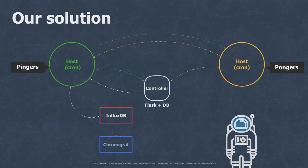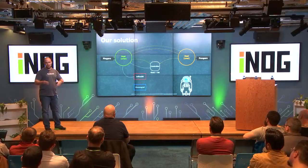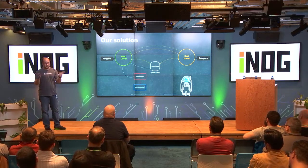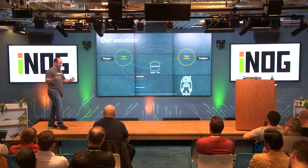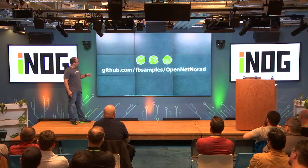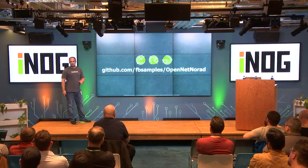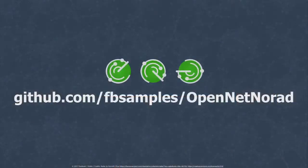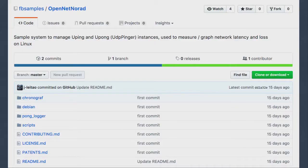You don't have to use the visualization layer if you don't want to, because with the information stored in the database you could build your automation directly — for example, if I'm seeing latency higher than a threshold, fire an event; if I'm having packet loss of a certain amount, drain a device. This is where you start building your imagination. That code is on GitHub at fb-samples-open-net-norad, and there you will find all the code.